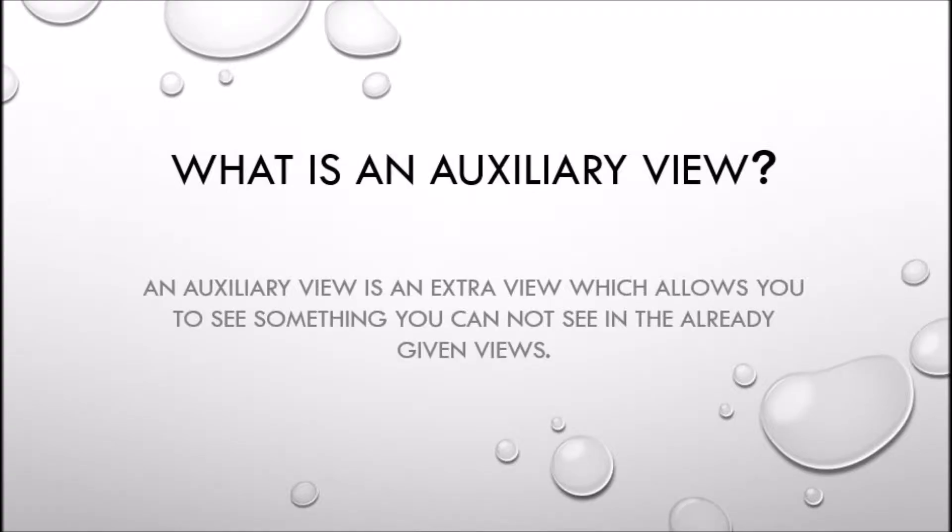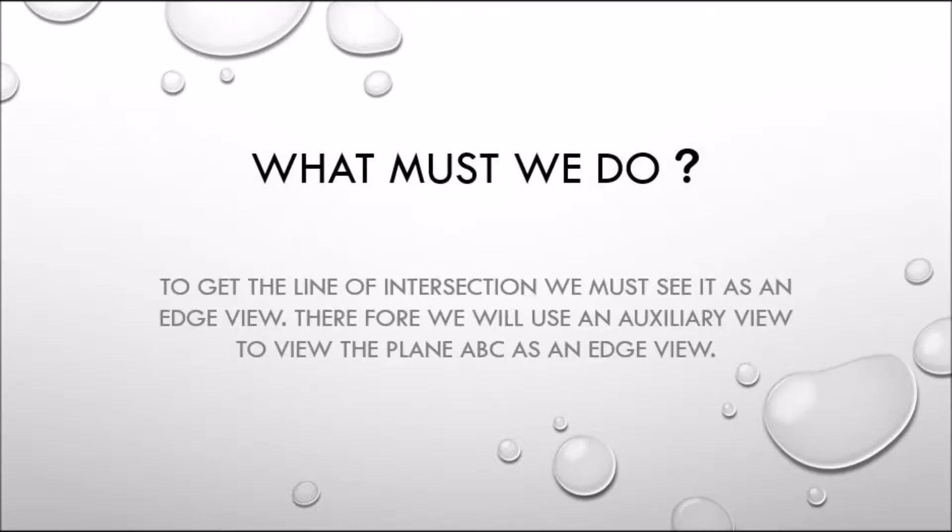So what is an auxiliary view? An auxiliary view is an extra view which allows you to see something you cannot see in the already given view. To get the line of intersection, we must first see it as an edge view. Therefore, we will use an auxiliary view to view the plane ABC as an edge view.